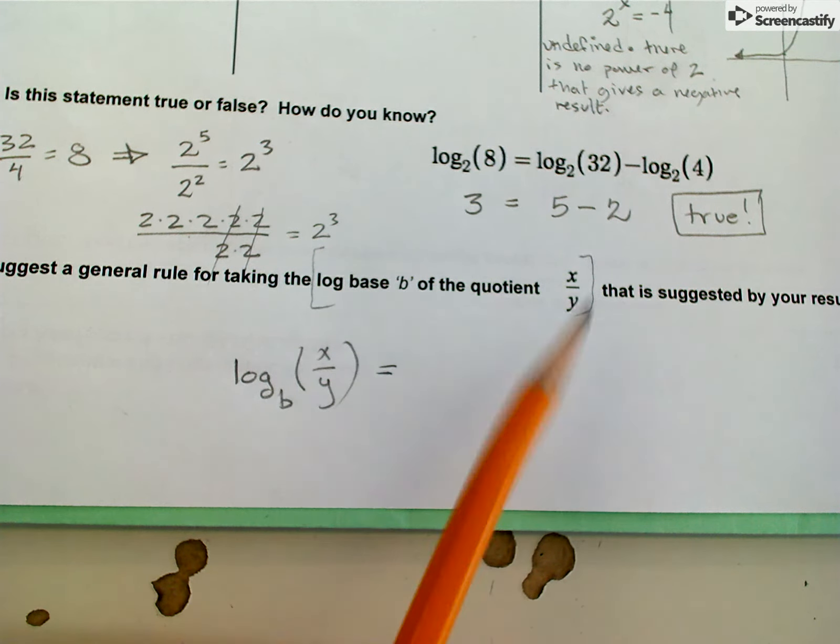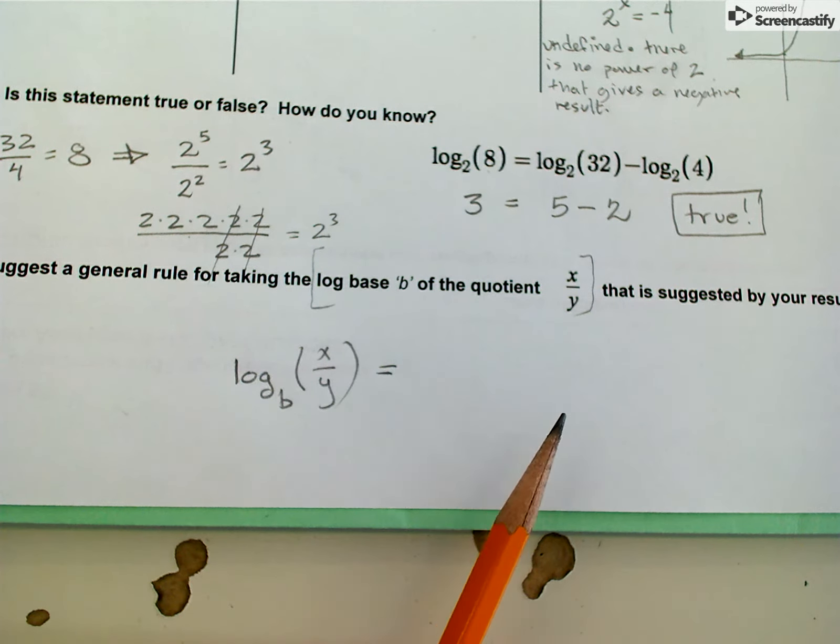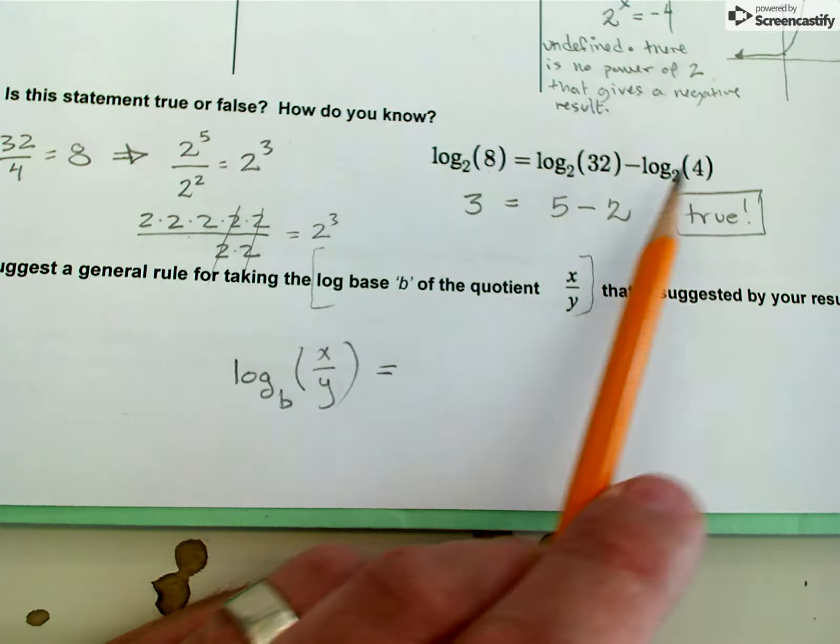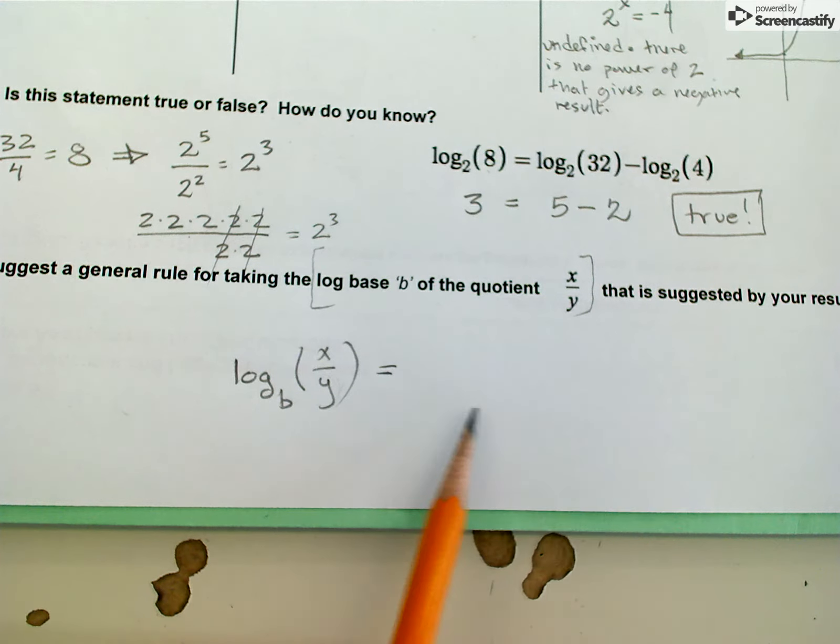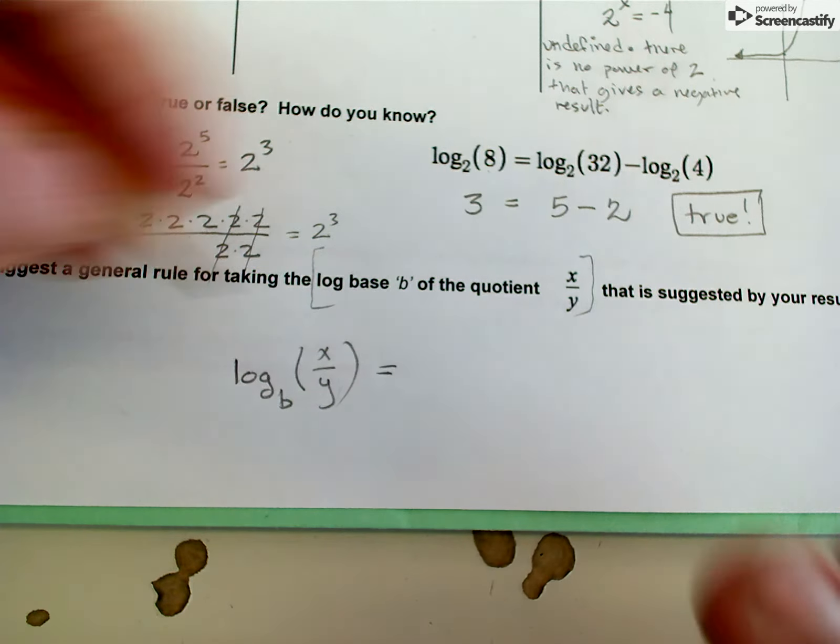What I really was meaning for you to see from this is that 8 is 32 divided by 4. So if this were my 8, then x would be 32 and y would be 4. So I can construct the right hand side of this general rule based on what I'm seeing here.